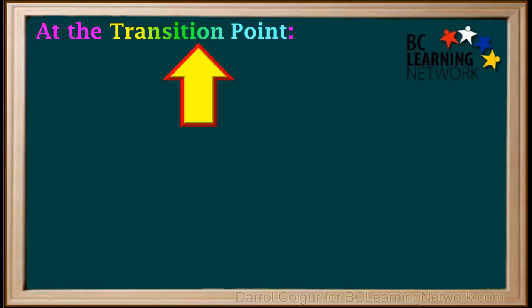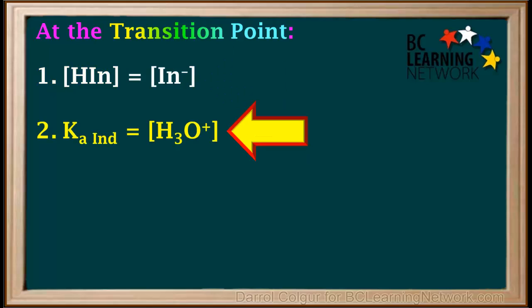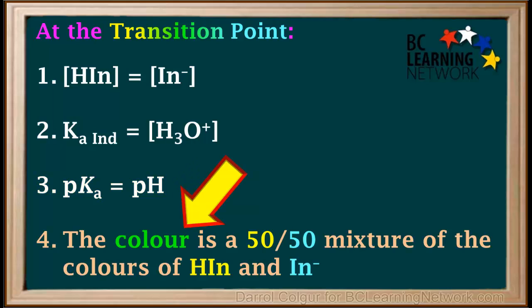We'll do a quick summary of what is true at the transition point of an indicator. By definition, at the transition point, the concentration of the acid form HIn is equal to the concentration of the base form In⁻. At the transition point, the Ka of the indicator is equal to the hydronium ion concentration. And the pKa of the indicator is equal to the pH. And the color is a 50-50 mixture of the colors of HIn and In⁻.